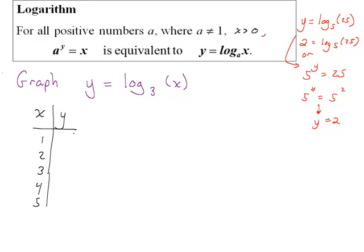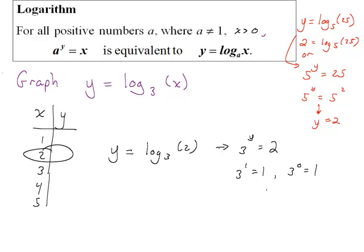I might be able to get an answer for x equals 1, but when I try x equals 2, I get y equals log base 3 of 2. That's equivalent to saying 3 to the y equals 2. In order to figure out y, I need to know what exponent on 3 gives me 2 as my answer. We know 3 to the first is 3 and 3 to the 0 is 1, so y has to be between 0 and 1, but I really can't guess that exponent. Making this kind of table is not appropriate for log functions.